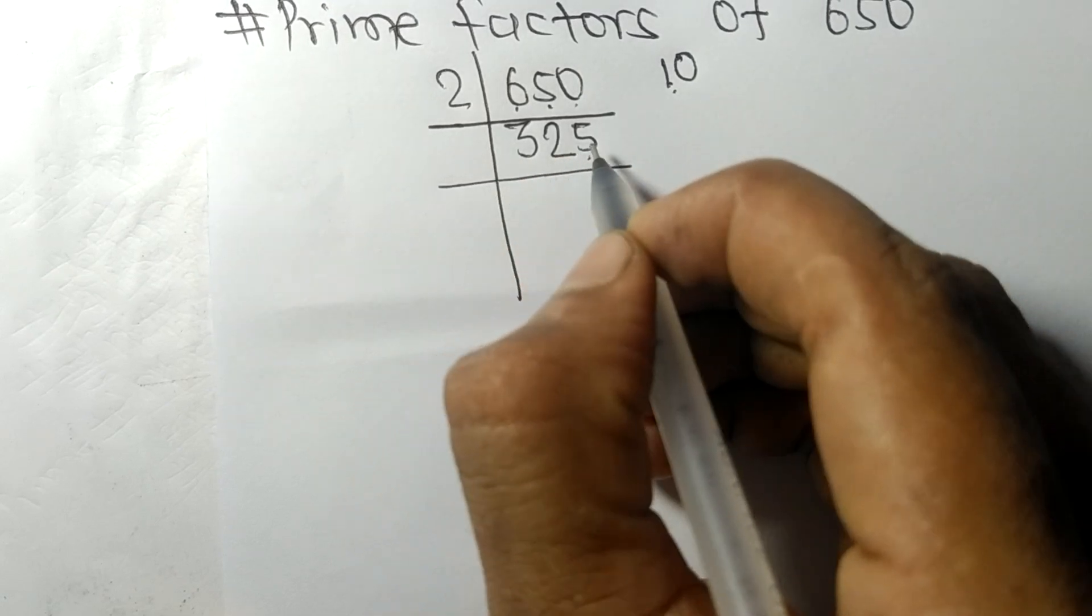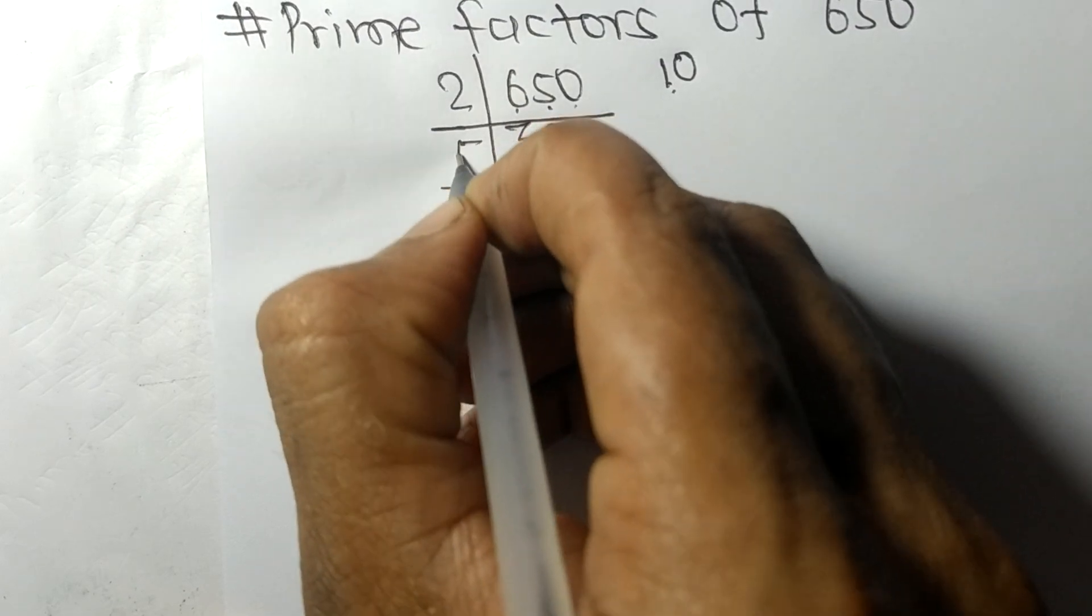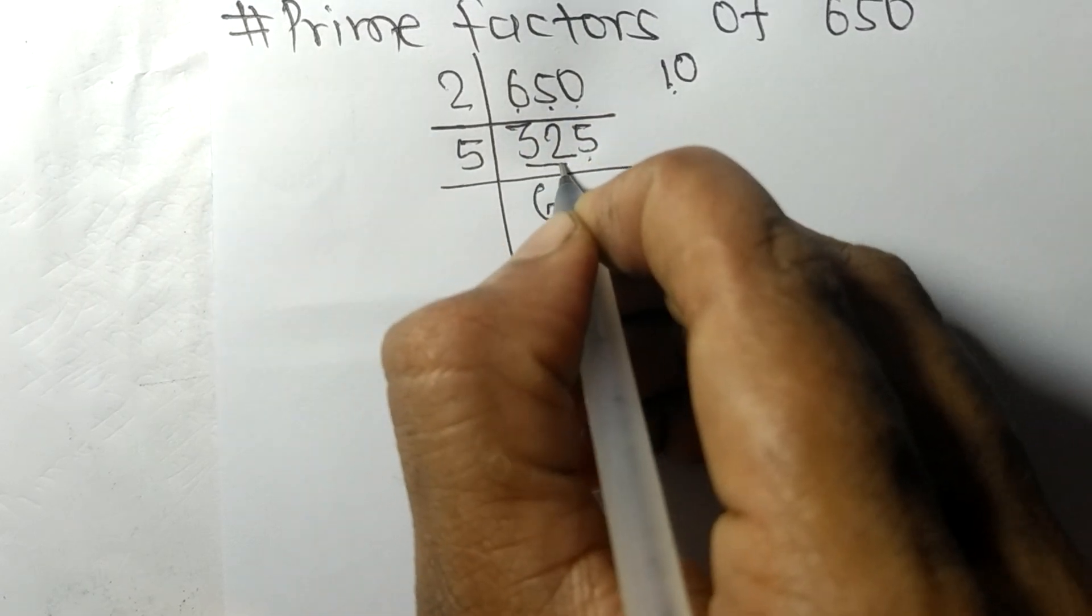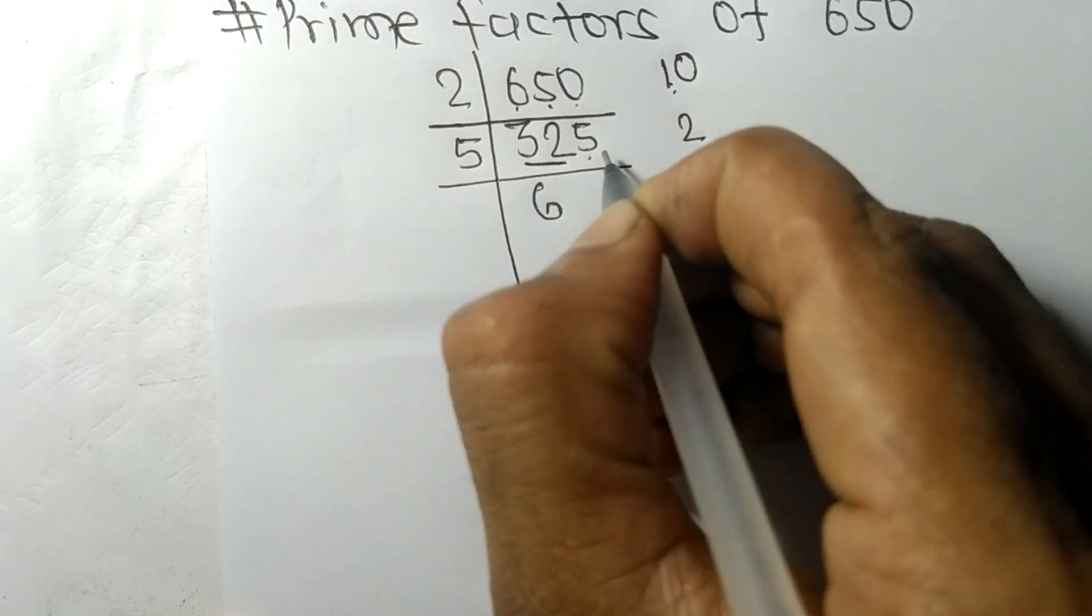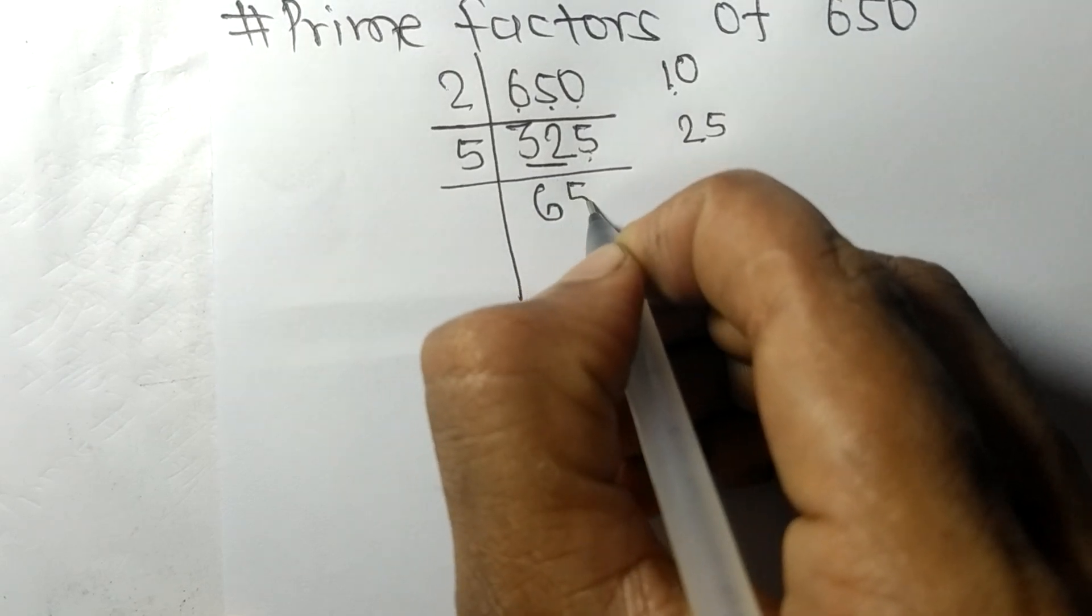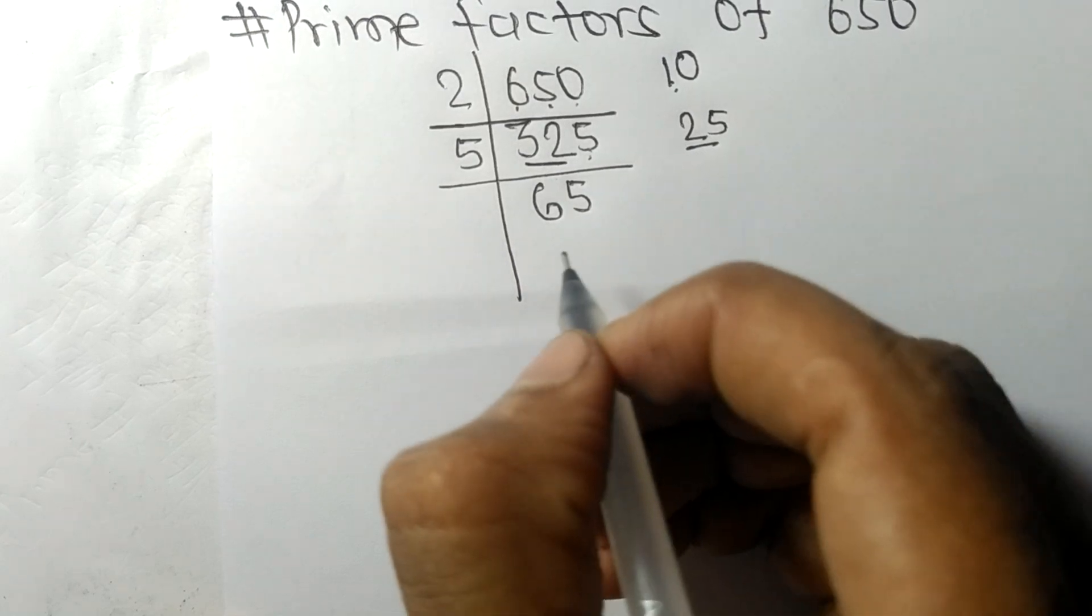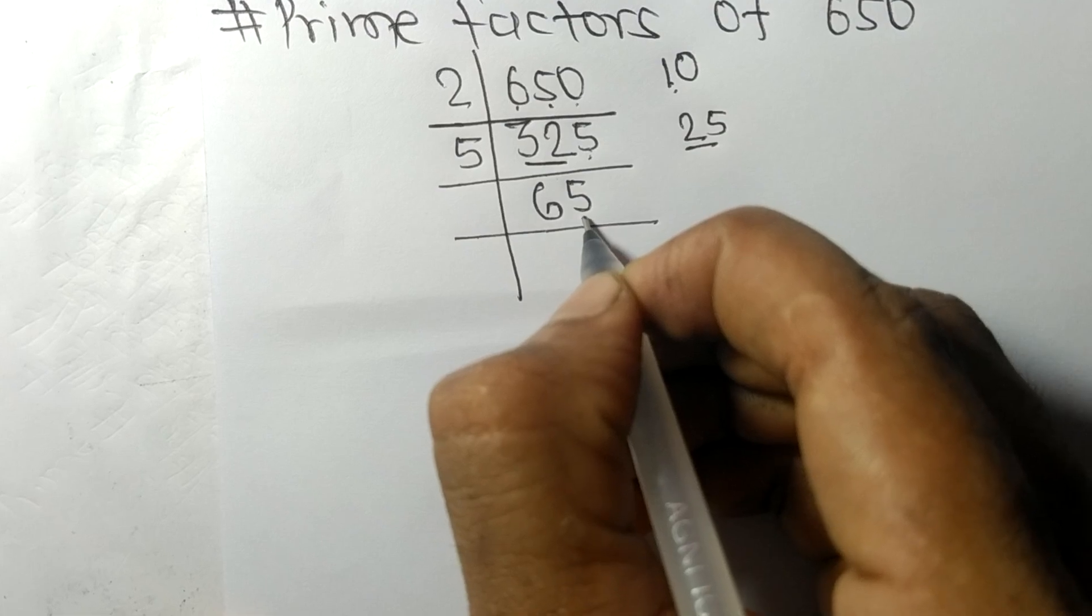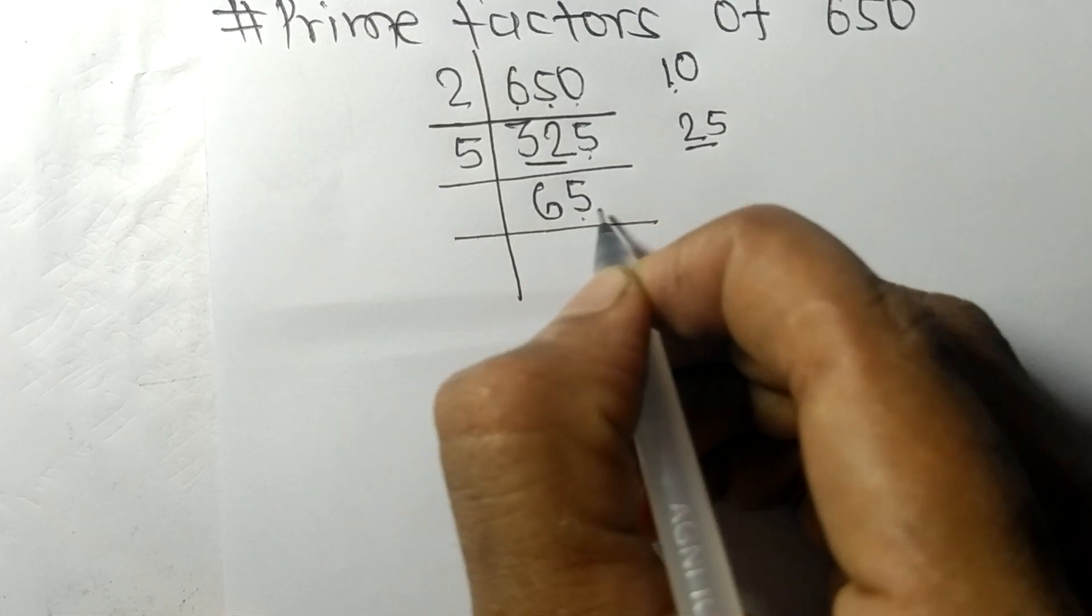5 times 6 equals 30, remainder 2, and this 5. 25 - 5 times 5 equals 25. Now we got 65, and again it ends in 5, so it's divisible by 5.